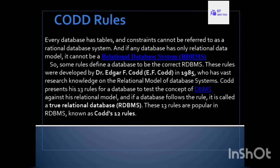Some rules define a database to be a correct RDBMS. These rules were developed by Dr. Edgar F. Codd in 1985. Codd presented his 13 rules for a database to test the concept of DBMS against the relational model. These 13 rules are known as Codd's Rules, and a correct RDBMS must follow all of them.